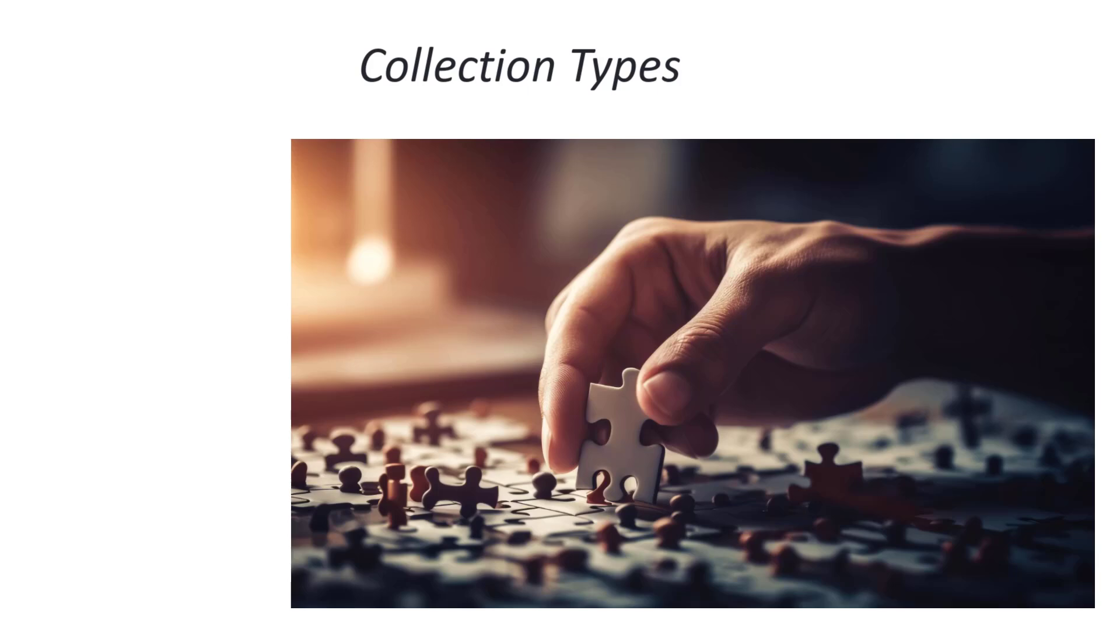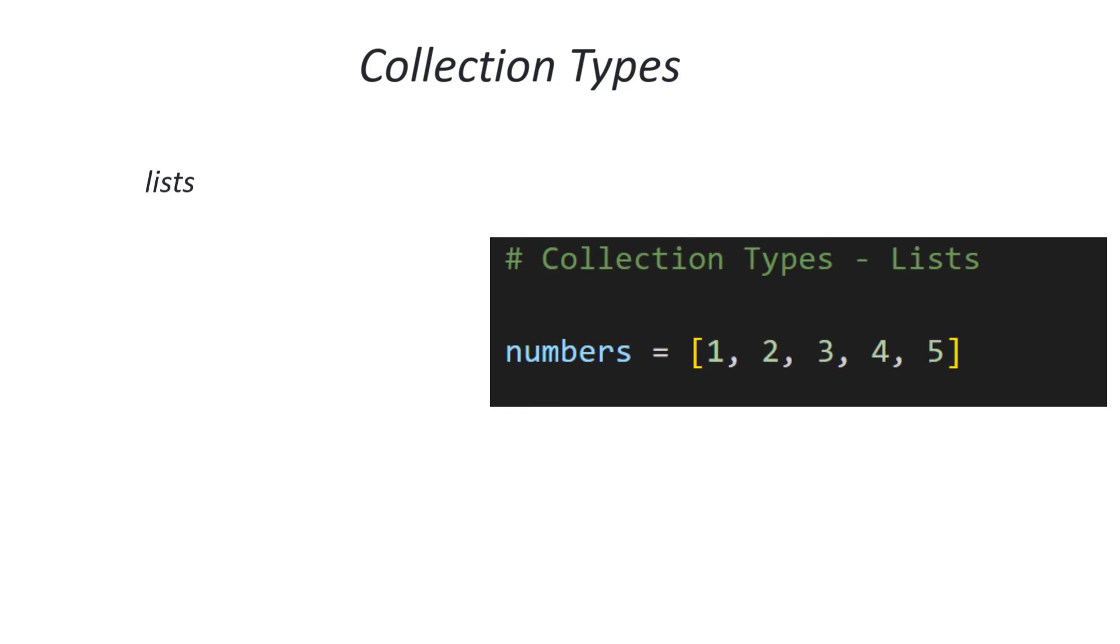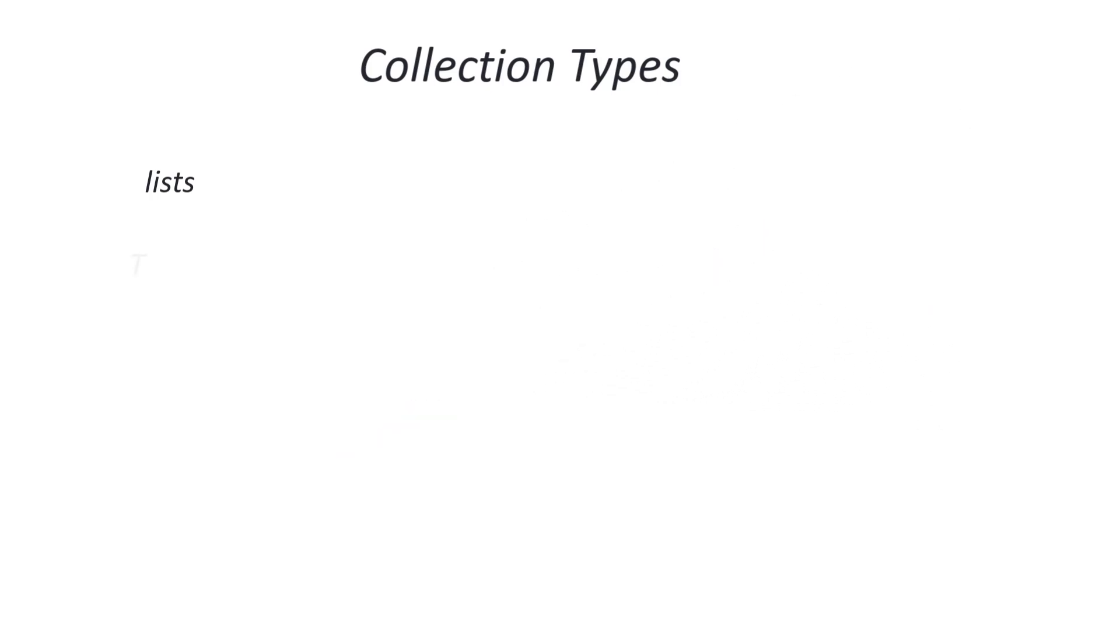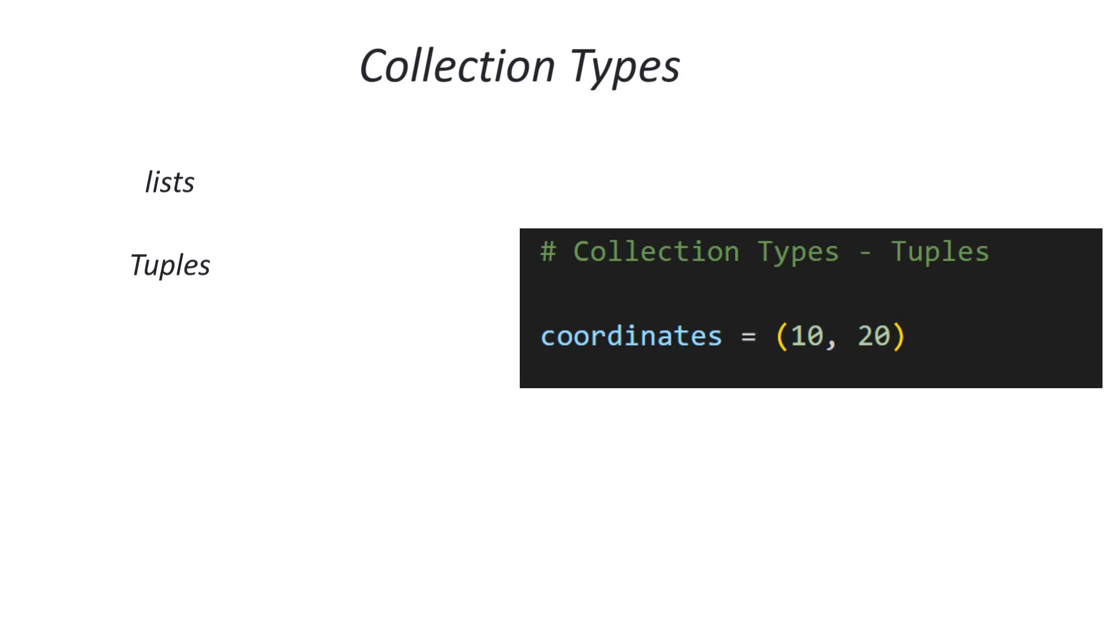Let's explore collection types briefly. Let's start with lists. Lists are ordered collections of elements allowing for easy modification. They are commonly used for storing sequences of data such as numbers or names. Tuples - tuples are immutable ordered collections of elements often used for fixed sequences of data. They are commonly used for representing coordinates, database records, or function return values.